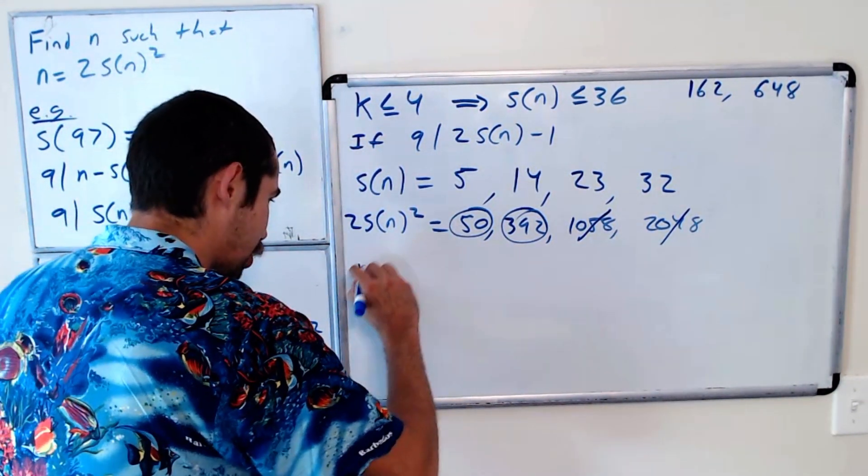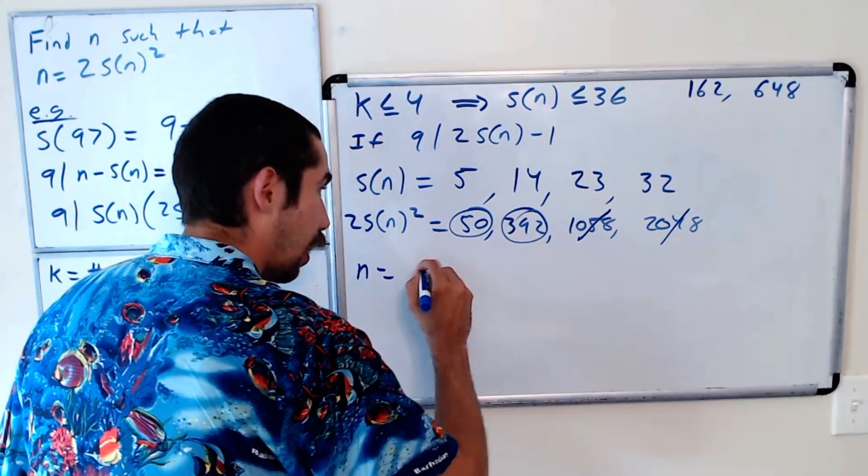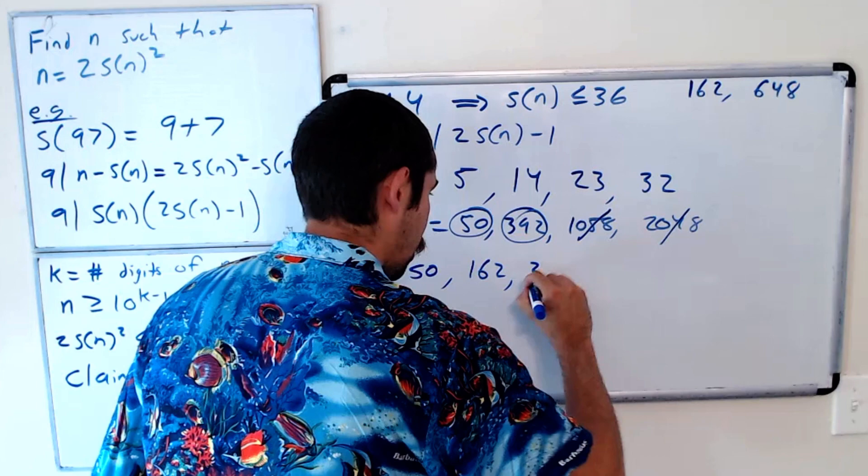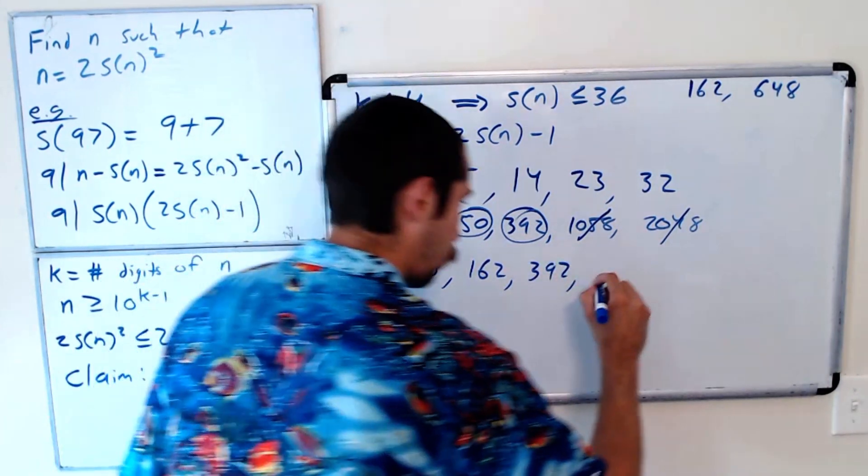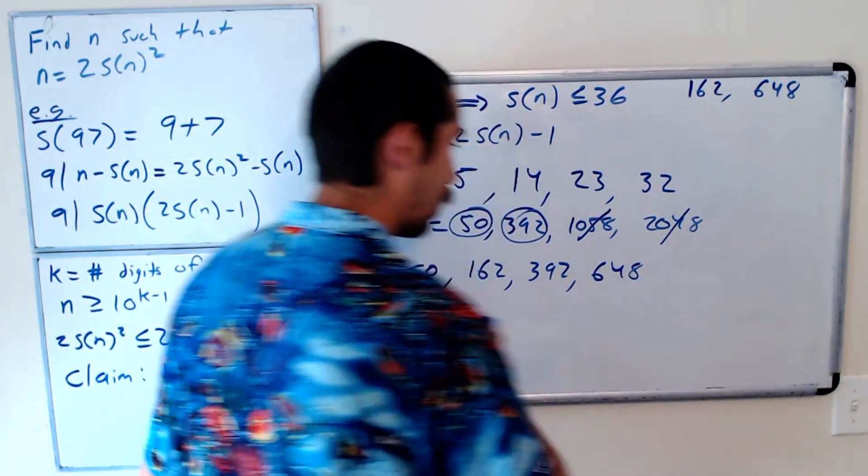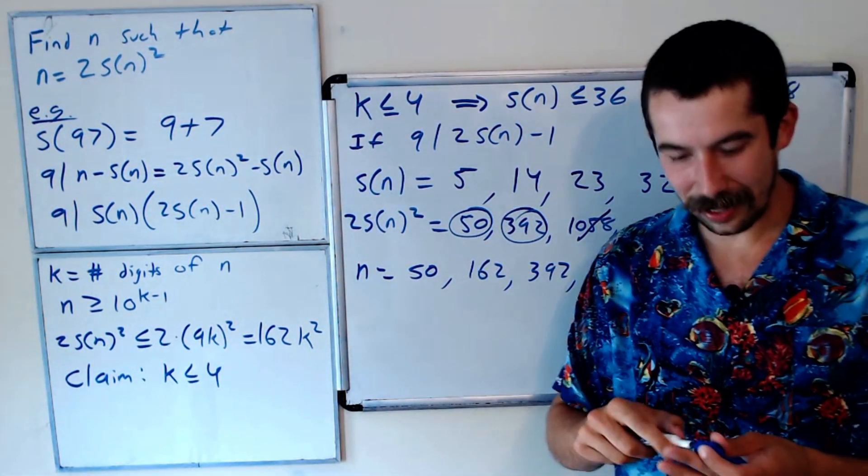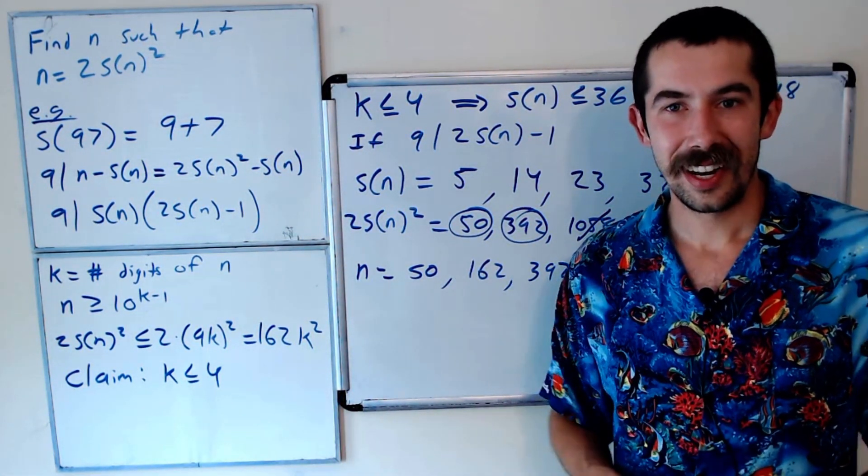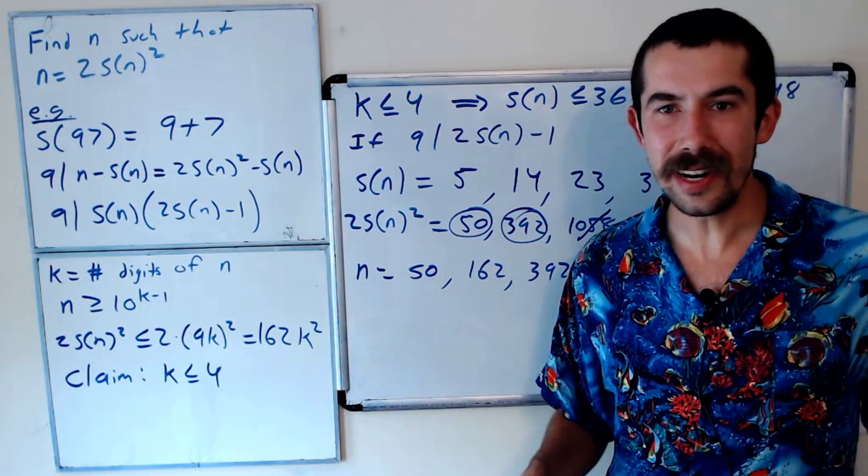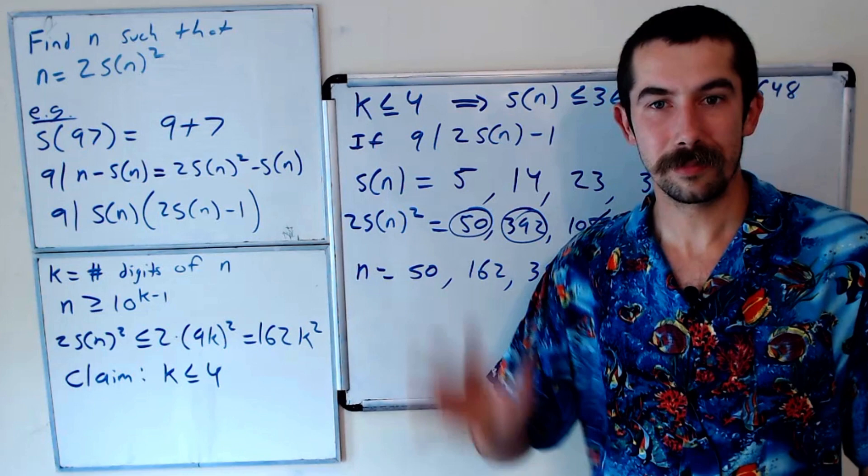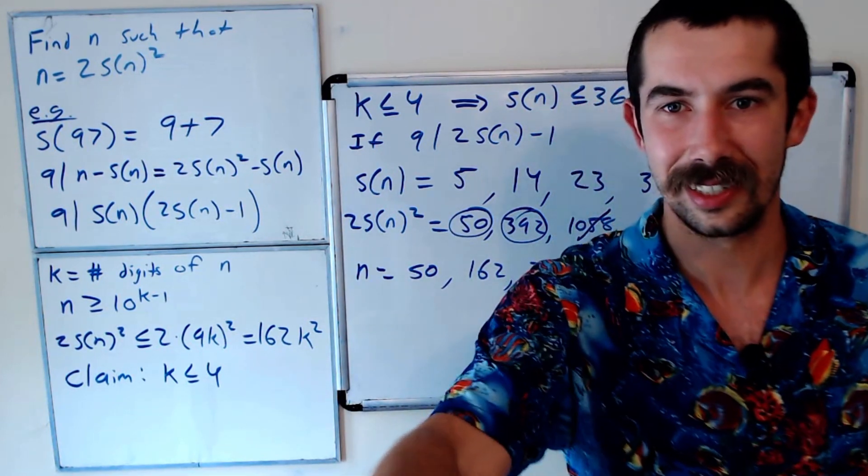We found the solutions. N is equal to 50, 162, 392, or 648. Those are the only solutions. Let me know what you think. If you like these Olympiad questions, I'm happy to do more. And let me know if anybody's from India and if you've done the Indian Math Olympiad. Thanks for watching. I'll see you later. Bye.